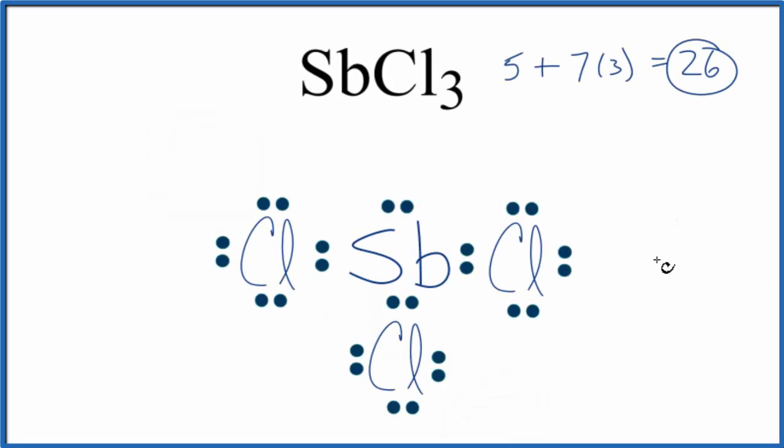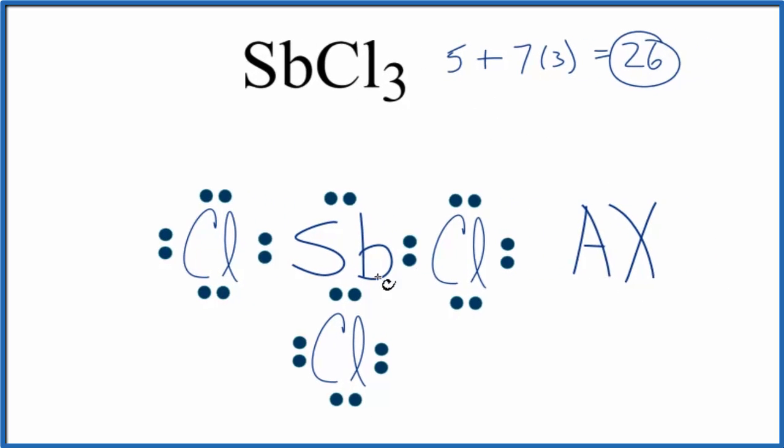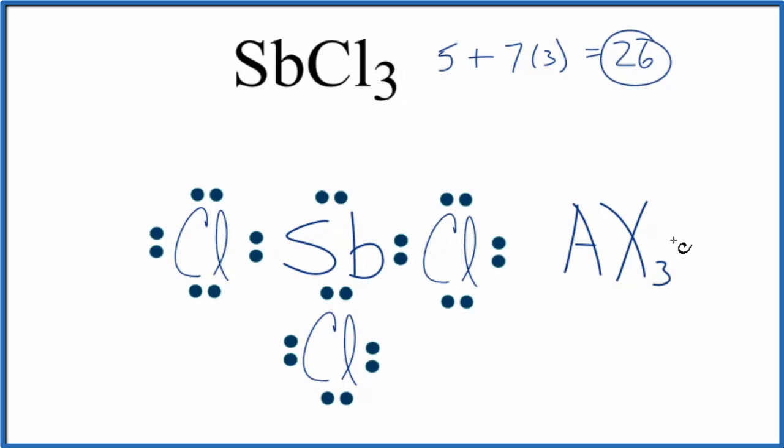We could also use the AXE notation to figure out the molecular geometry for SbCl3. A is the central atom. X, that's the number of atoms bonded. We have 1, 2, 3. And then E, that's the number of lone pairs. We have the one lone pair here. So we have AX3E1. If you look that up, you would get the trigonal pyramidal molecular geometry, just like we saw before.